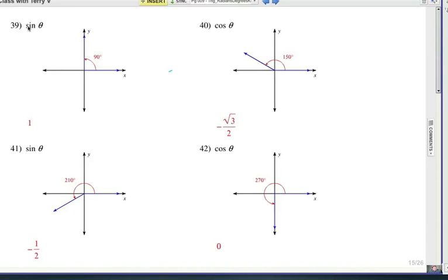Number 39, the sine of theta. Well, if it's the sine value, we know at 90 degrees that's this vertical piece right here. And that of course is 1, because that's the radius of that unit circle. Remember how it would be coming around like that? And that would definitely be the radius. So sine is positive 1.